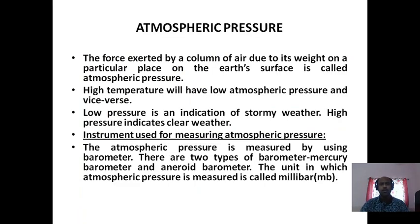The second element is atmospheric pressure. It is the force exerted by the column of air on the surface of the earth. High temperature will have low atmospheric pressure and vice versa. Low atmospheric pressure is an indication of stormy weather, whereas high atmospheric pressure indicates clear weather. The instrument used for measuring atmospheric pressure is the barometer. There are two kinds: the mercury barometer and the aneroid barometer. The unit is millibar.